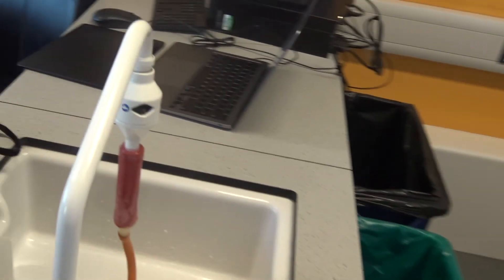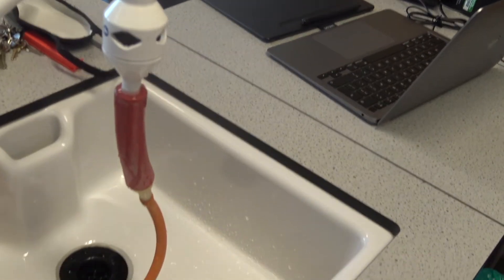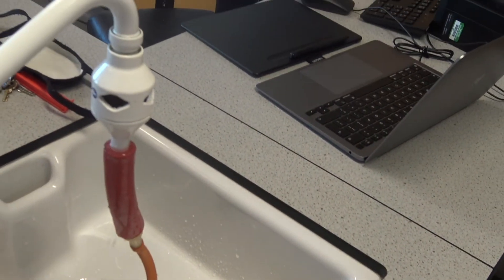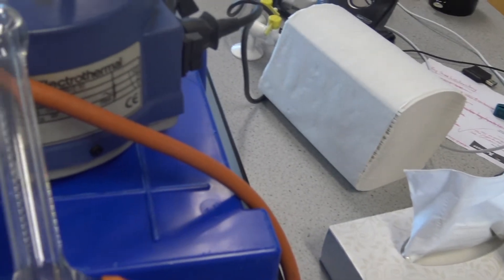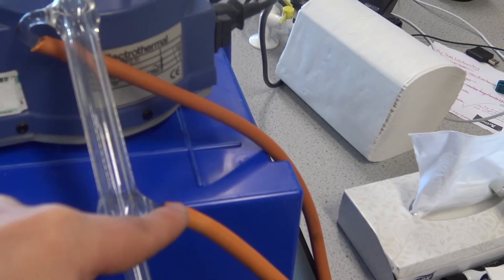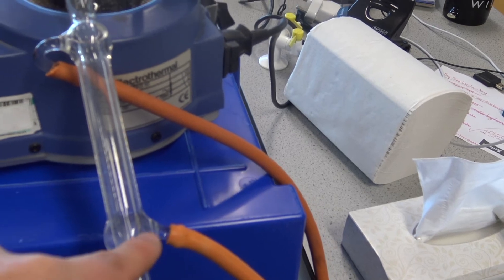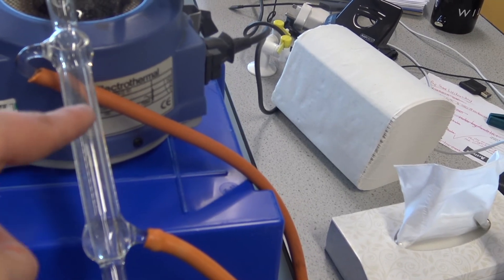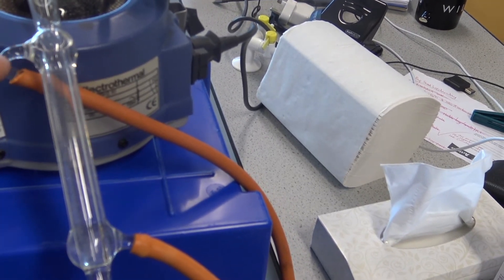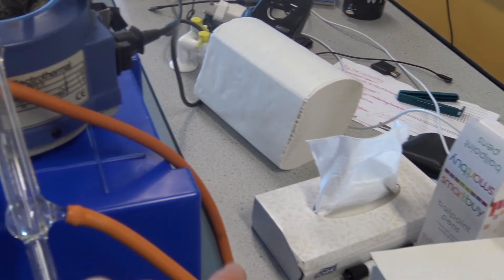But before we do that, I just want to show how this condenser works. It's connected to a tap, and the tap is connected here to the bottom end of my Liebig condenser. So the water travels into my Liebig condenser at the bottom, travels all the way up to the top, and back around and down.